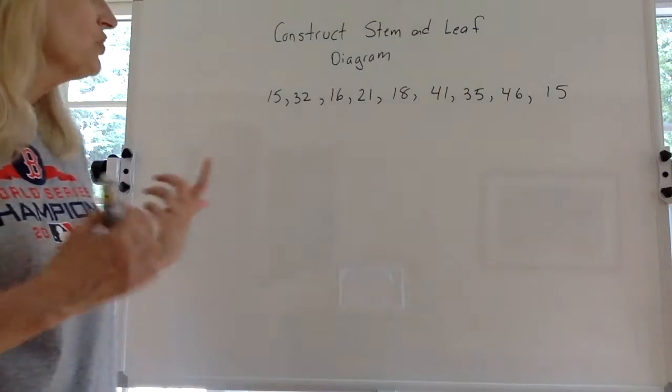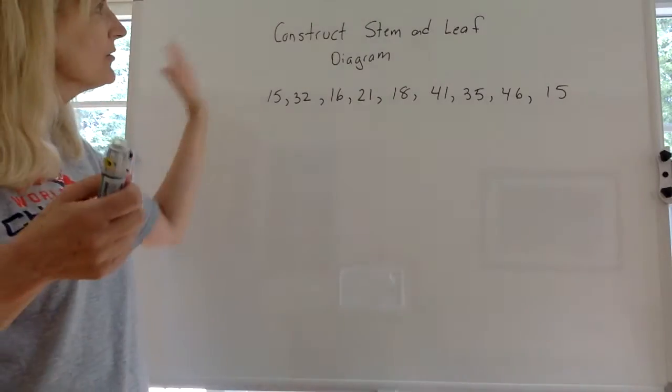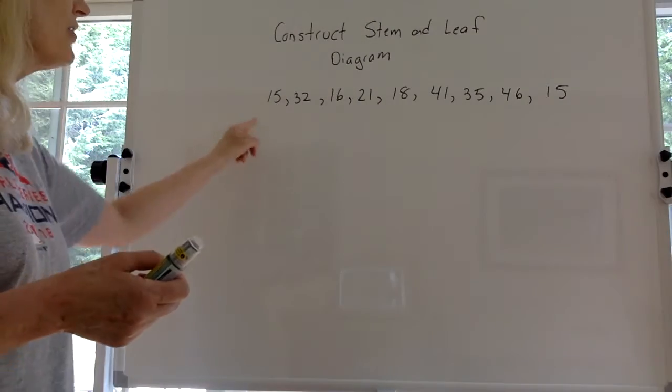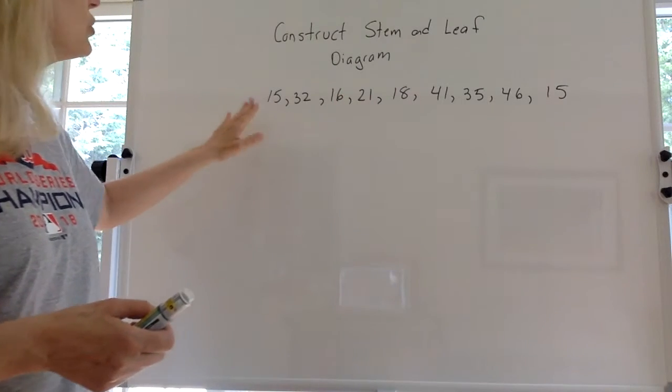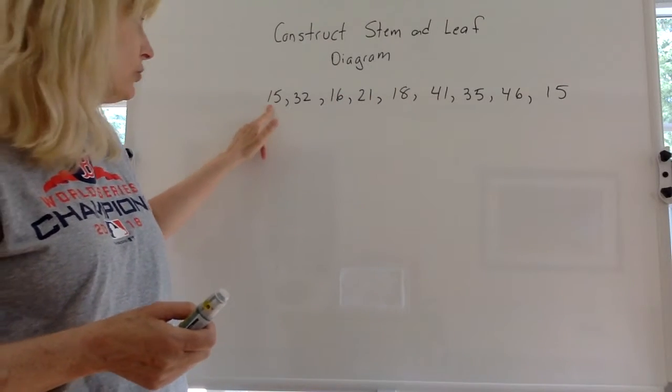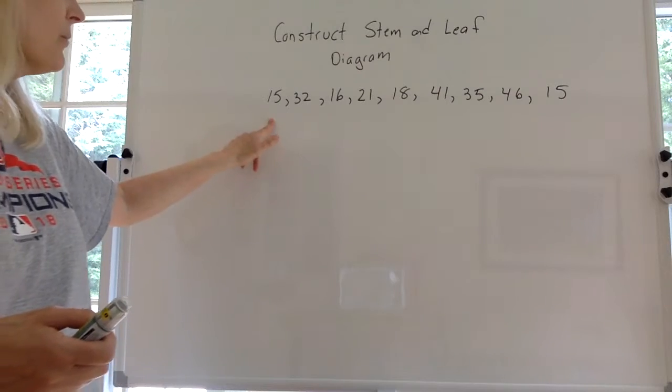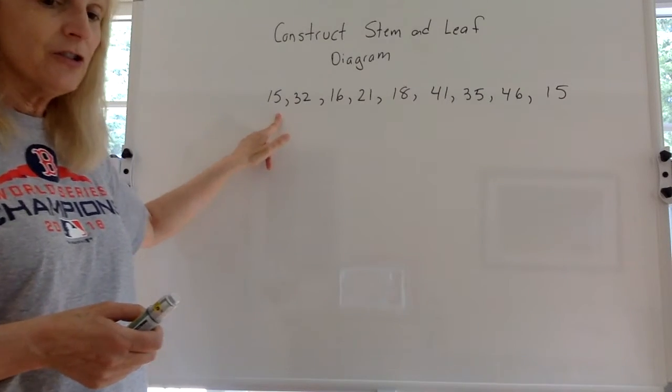You got to think of the numbers as two parts. There's a stem part and there's a leaf part. The stem part is, in this case we only have two digit numbers, the stem part is the first digit in the number and the leaf is the second digit in the number.